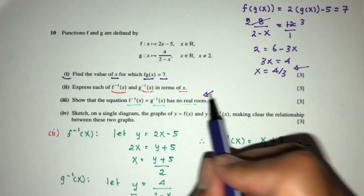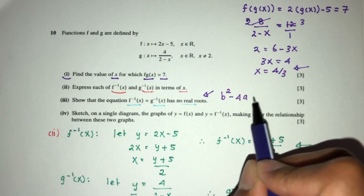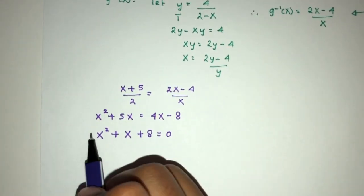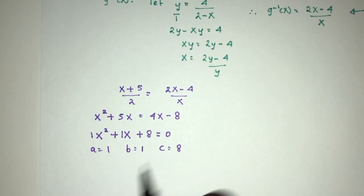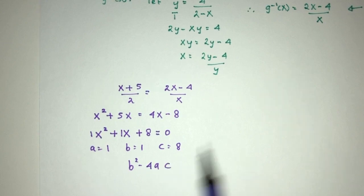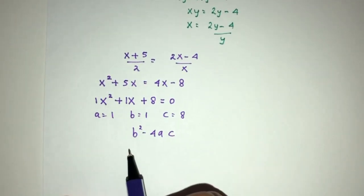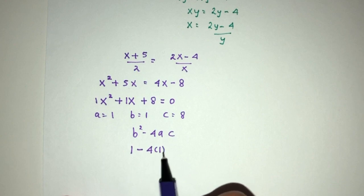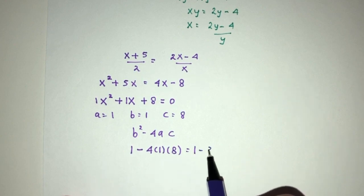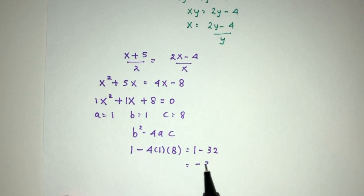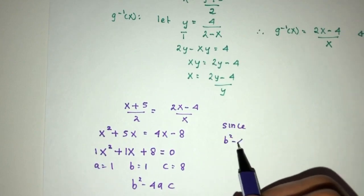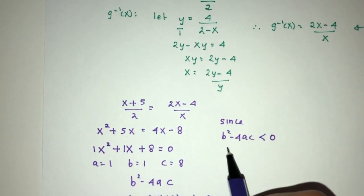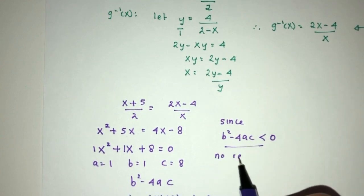Now we have to show they have no real roots. To show this, we look at the discriminant b² - 4ac. Here we have a = 1, b = 1, and c = 8. So b² - 4ac is 1 - 4(1)(8), which is 1 - 32 = -31. Since the discriminant b² - 4ac is less than 0, it shows it has no real roots.